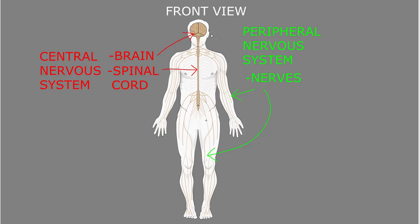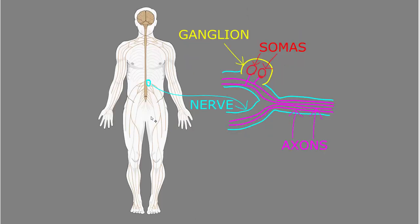Some parts of the olfactory or smell and visual pathways that are outside the brain are also central nervous system tissue, but we'll get into that later. The peripheral nervous system is mostly made up of nerves, which contain bundles of axons from motor, sensory, and autonomic neurons, which we'll talk more about later.